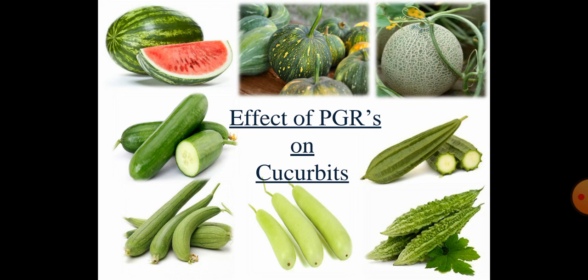Crops belonging to the family Cucurbitaceae are generally known as cucurbits. They consist of a wide range of vegetables used for salad purpose, cooking purpose, pickling, dessert, and preservation in processing industries. As a group, cucurbits occupy the largest area in India and in other tropical countries.